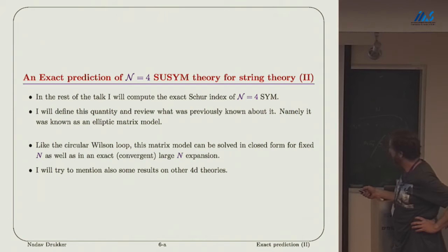Let me turn now to the new research and a new exact prediction for string theory. This is the Schur index of N equals 4 super Yang-Mills, and I will define it briefly in a second. It is also a matrix model, and it can also be solved in closed form. My solution will exactly mirror what we did for the circular Wilson loop. There are going to be expressions for finite N and an expansion at large N. Even though the matrix model looks much more complicated, the solution is extremely easy. I can write explicitly all terms in the expansion.